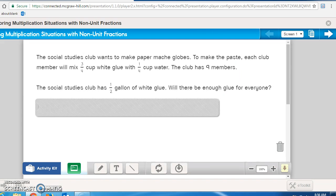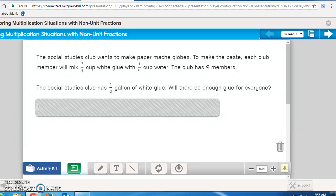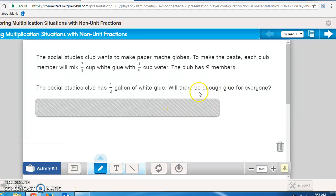Let's explore another multiplication situation with non-unit fractions. It says, the Social Studies Club wants to make paper mache globes. To make the paste, each club member will mix three-fourths cup of glue with one-fourth cup of water. The club has nine members. The Social Studies Club has a half gallon of white glue. Will there be enough glue for everyone? So again, we need to look at what they're asking. We're looking at if there will be enough glue. So I'm looking back up. It says they will need three-fourths a cup of white glue, again, with nine members. Well, let's check it out.